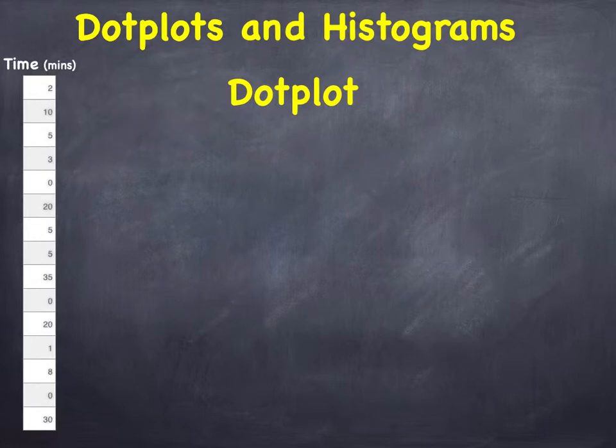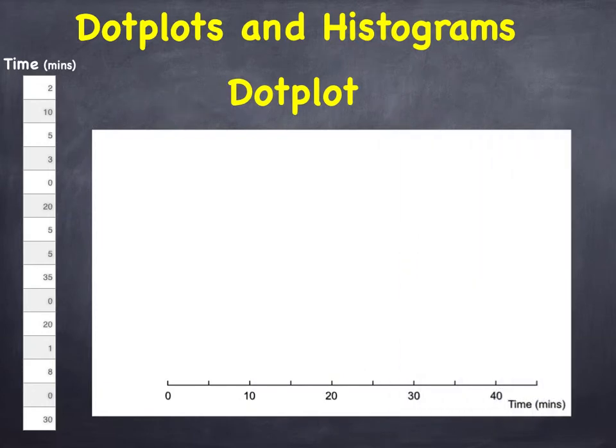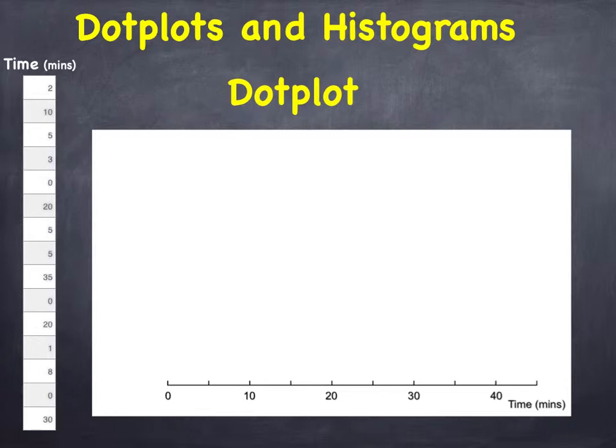To form a dot plot I first need a horizontal line with a suitable scale and I need a label showing what is being measured as well as the units, which in this case is minutes.